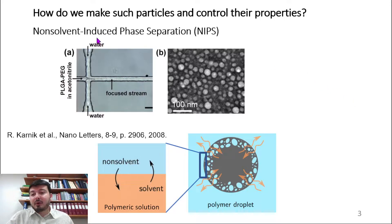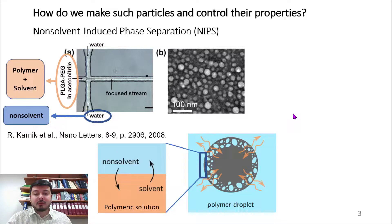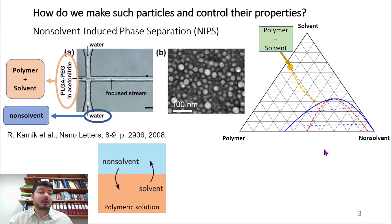How can we make such particles and control their properties? We picked a process called non-solvent induced phase separation, or NIPS. In this process, we have a polymeric solution that comes in contact with a bad solvent or non-solvent. By the exchange of solvent with non-solvent, as the non-solvent concentration increases inside the polymeric solution, you have phase separation of the polymer from the bad solvent. This can potentially lead to formation of pores inside porous particles or formation of membranes and films.